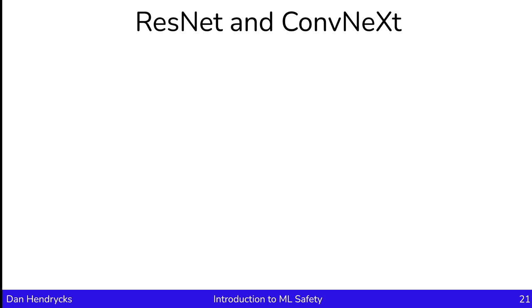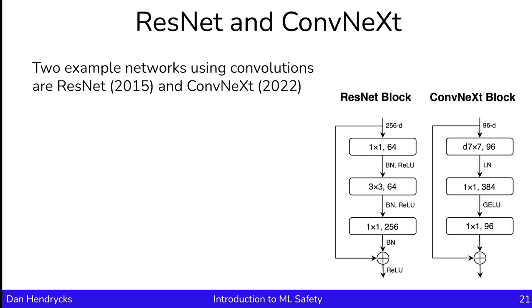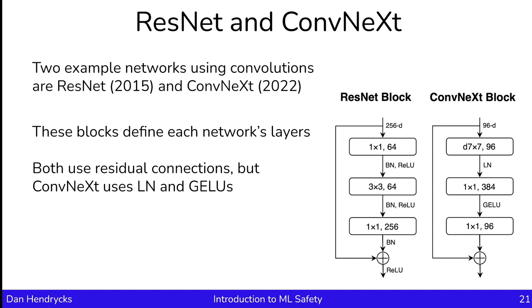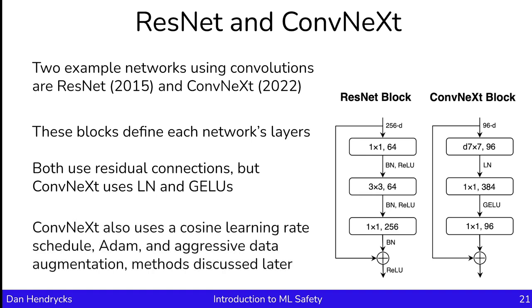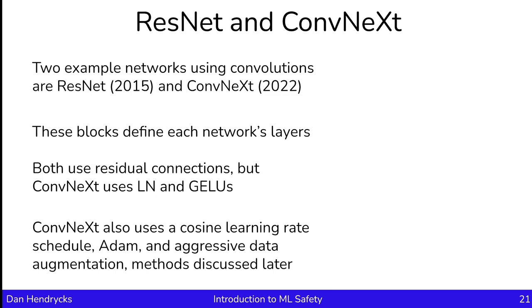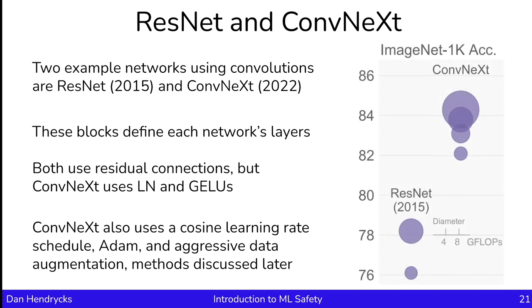Let's look at two neural network architectures separated by many years. ResNet is from 2015 and ConvNext is from 2022. Both networks use residual connections. However, ConvNext uses layer normalization instead of batch normalization, and uses GELUs rather than ReLUs. ConvNext also uses a cosine learning rate schedule, Adam optimizer, and aggressive data augmentation. The ultimate impact of these changes is an increase in ImageNet accuracy. In short, ConvNext summarizes the best training practices and architectural modifications from the past seven years.